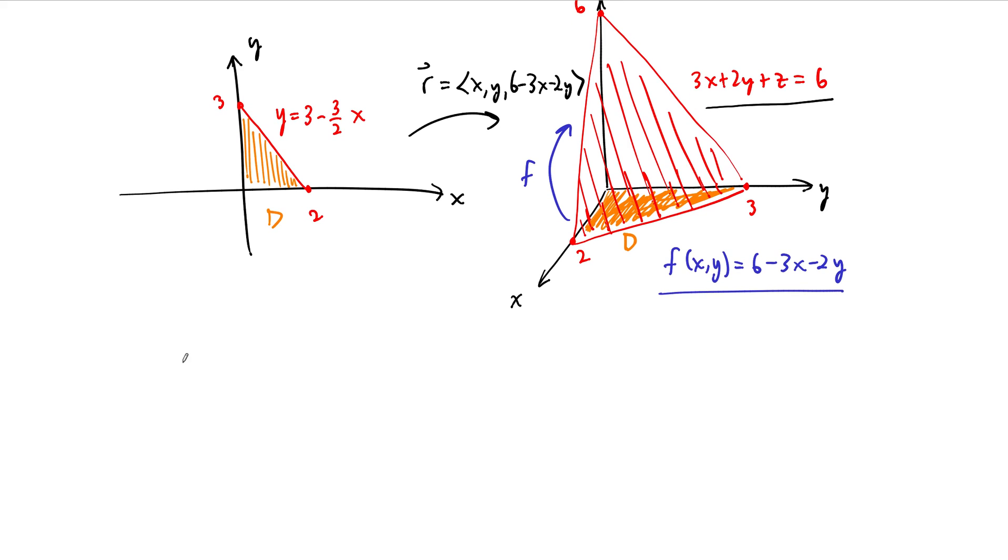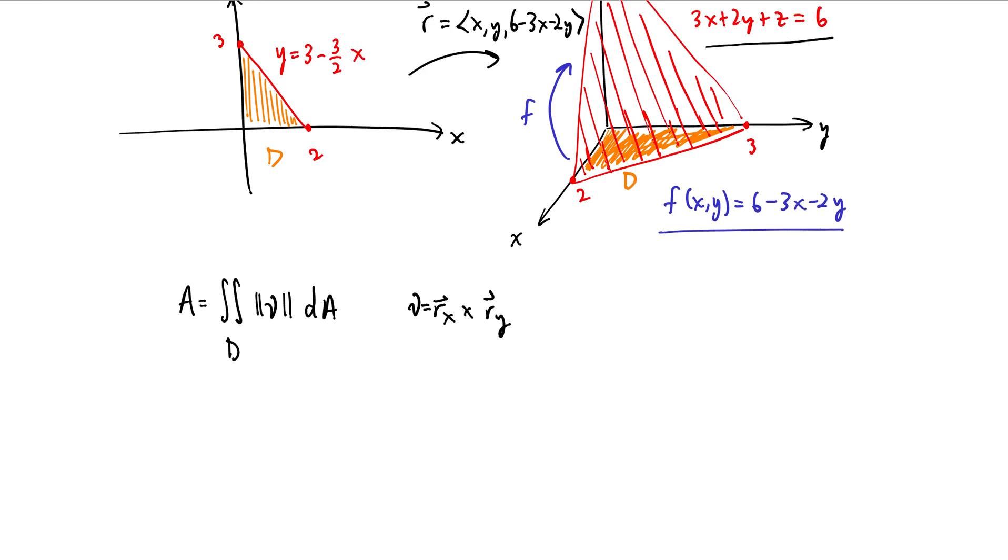In this case, we know that the formula for the surface area is the double integral over the parameter domain of the length of the normal vector, or the normal vector field, dA. But this normal vector field is going to be very nice. So remember, the normal vector nu is equal to the cross product of the two partial derivatives of this parametrized function here. And so this is going to be the cross product of a couple of very nice vectors. I'm going to write out everything here just so we can see all the work.